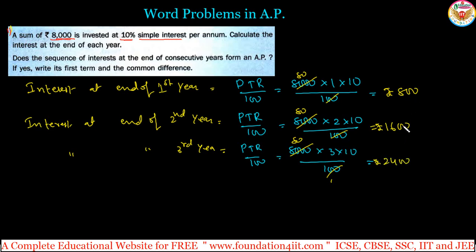Now we have ₹800, ₹1,600, ₹2,400, and so on. This is the sequence: 800, 1600, 2400... This is in arithmetic progression. If you observe, the common difference is the same—second term minus first term equals third term minus second term.